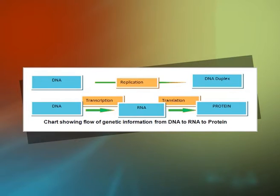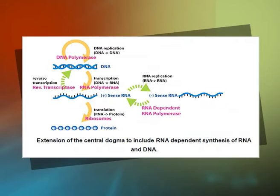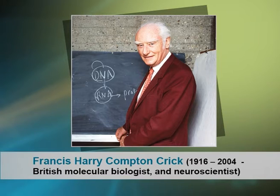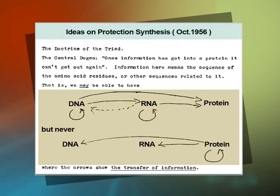Please see the chart on the screen, which shows the flow of genetic information from DNA to RNA to protein. The second chart shows the extension of the central dogma to include RNA-dependent synthesis of RNA and DNA. The central dogma was first stated by Francis Crick in 1958 and restated in a Nature paper published in 1970. The figure shown illustrates the origin of the central dogma of molecular biology by Francis Crick.